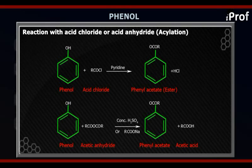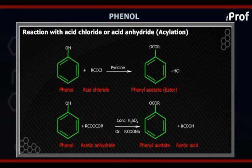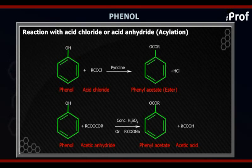This phenyl acetate can also be prepared when you react phenol with acetic anhydride, that is CH3CO-O-COCH3. Again, it is the same situation: the lone pairs on the oxygen atom of phenol will attack on the carbonyl group of acetic anhydride, and this intermediate is being formed as shown on the screen.